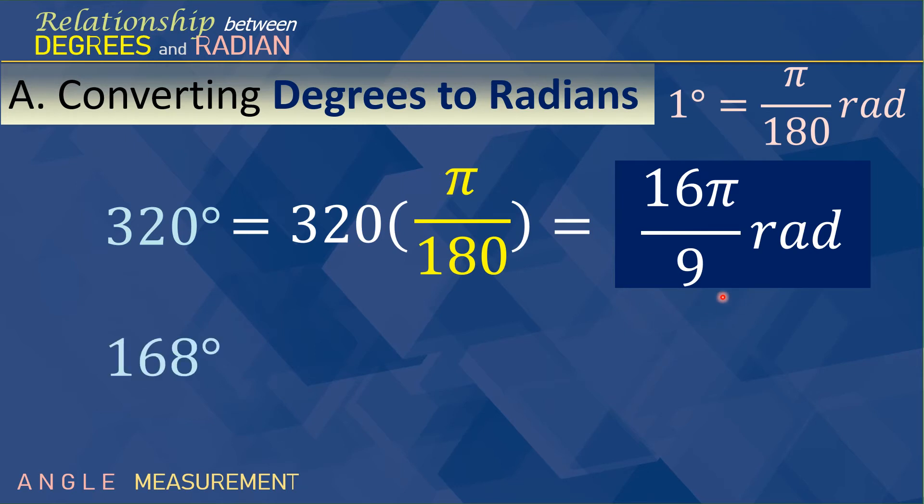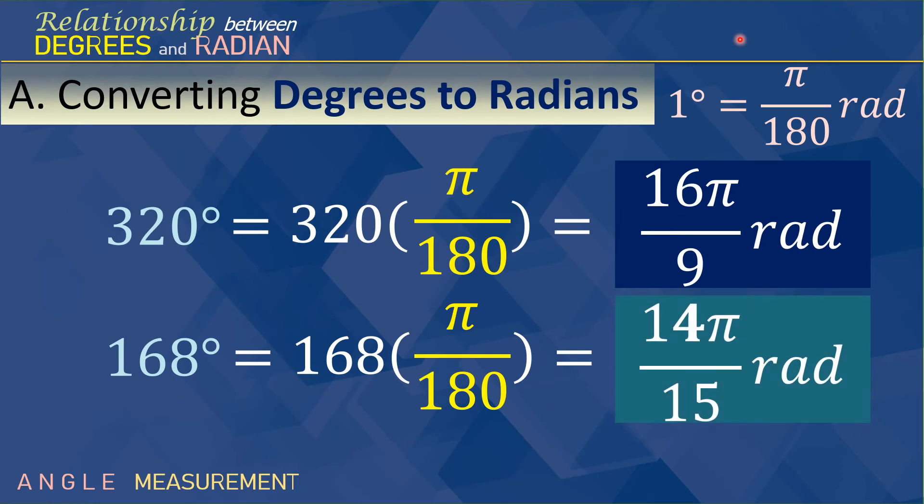Second, 168 degrees. So, 168, we multiply that to pi over 180 degrees. Because, again, we know that 1 degree is pi over 180. We simplify that, and we have 14 pi over 15 radians.